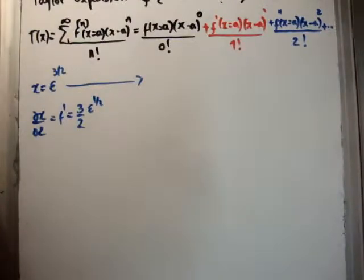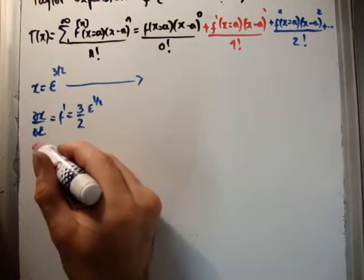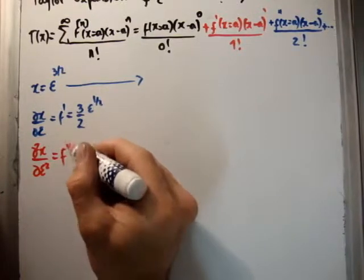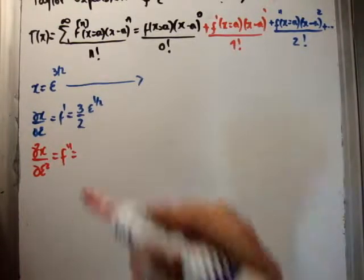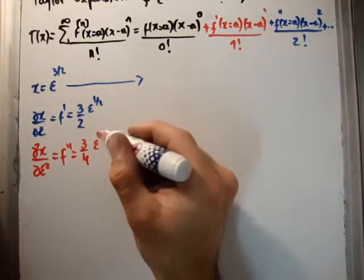I'm going to get two more derivatives. So d²x/dε² is equal to f'', and that's equal to 3/4, and we're going to have ε^(-1/2).